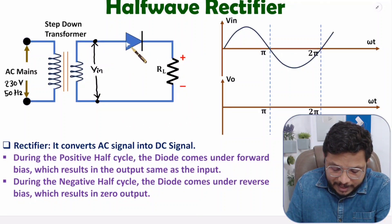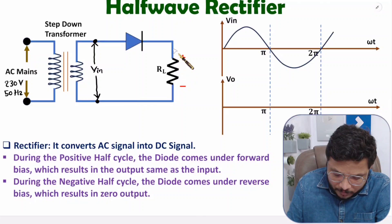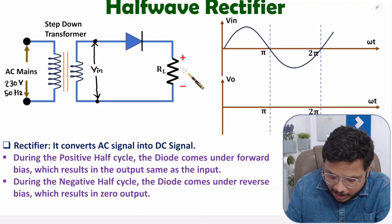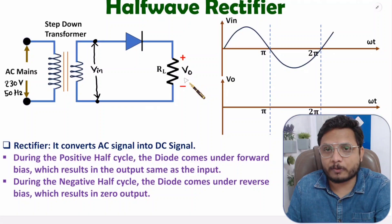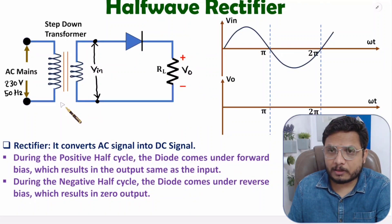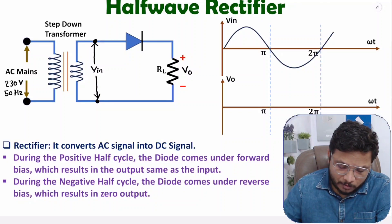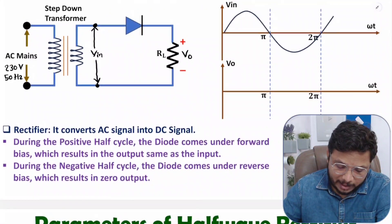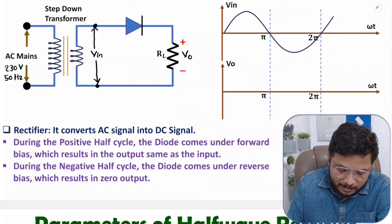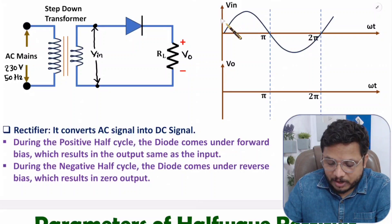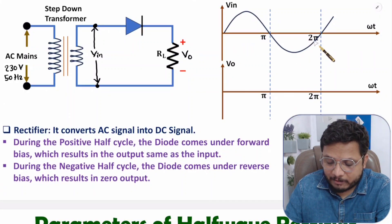Further in the circuit, we have one diode and a load resistance RL. Across RL we take our output voltage, which we call VO. That is the basic circuit of the half wave rectifier. Now let me explain the working of this circuit. VIN is an AC signal, and you can observe in the waveform that it has a positive half cycle and a negative half cycle.